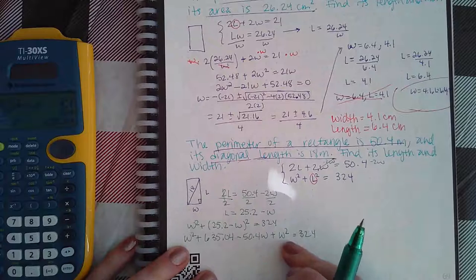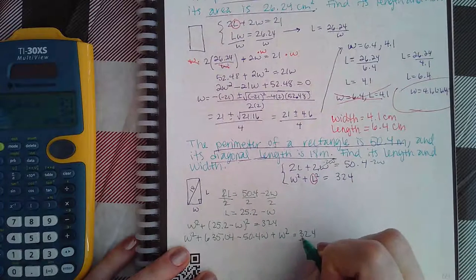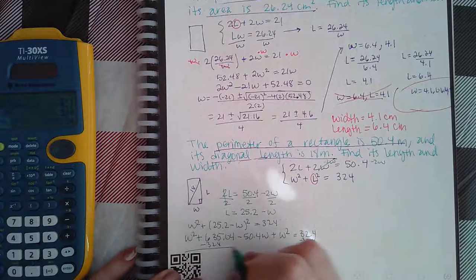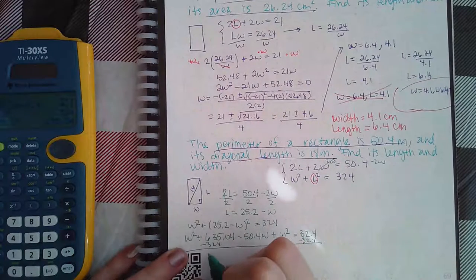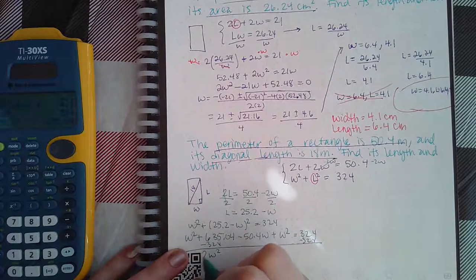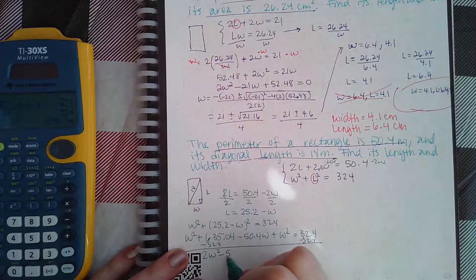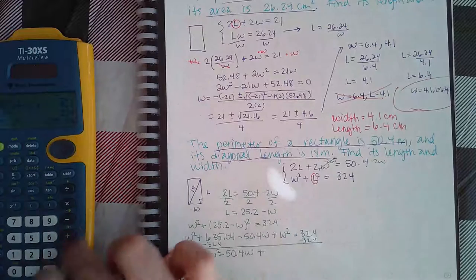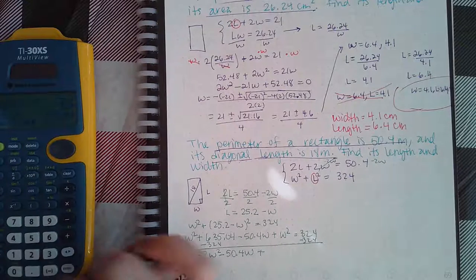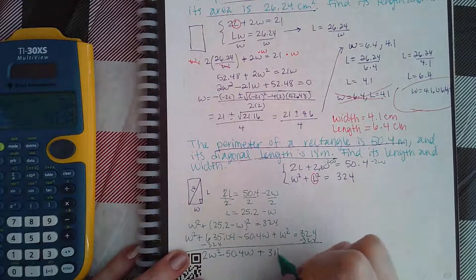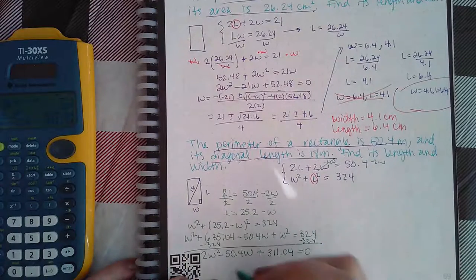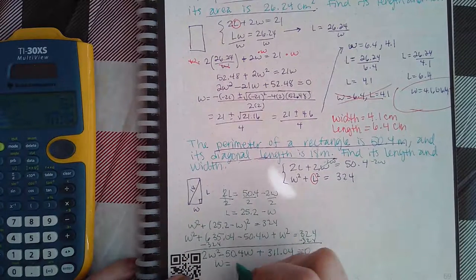I do have W squared, so I am going to minus the 324 over just to get it all on one side, and I'm going to combine my like terms. So I have 2W squared minus 50.4W plus 311.04 equals 0.